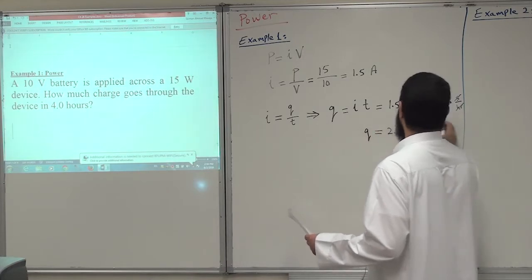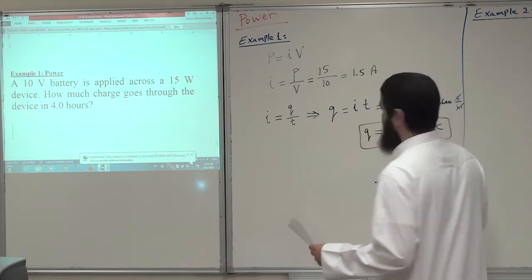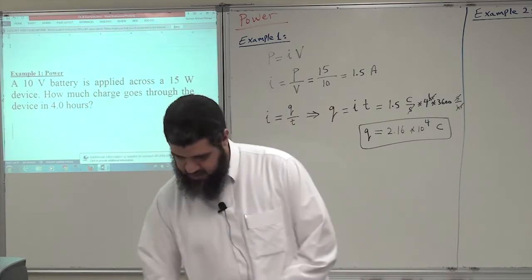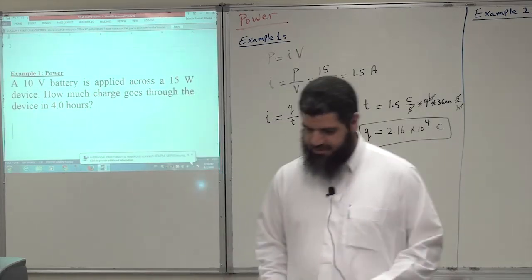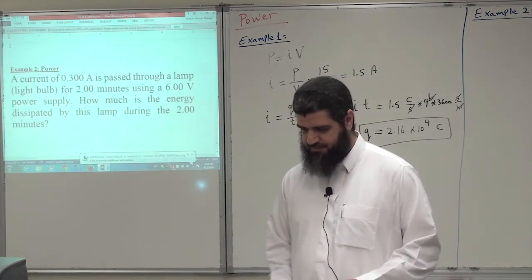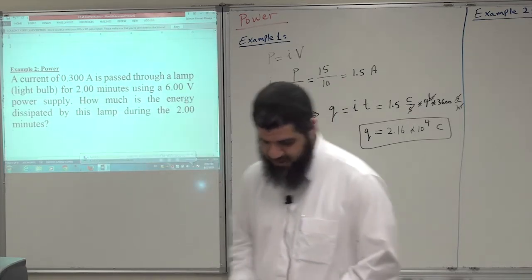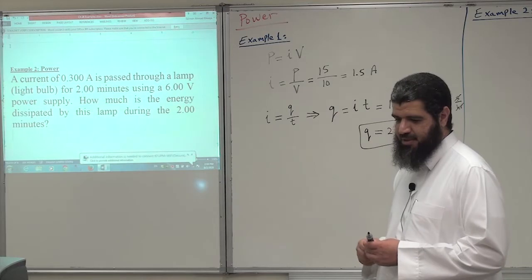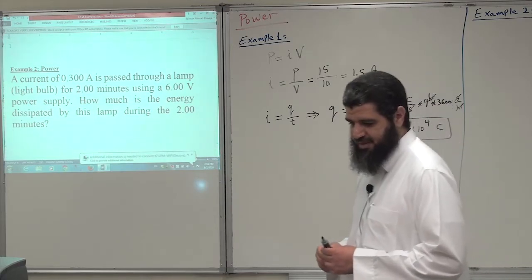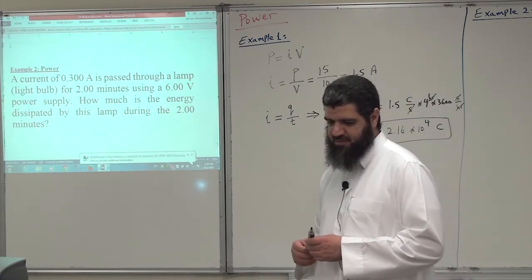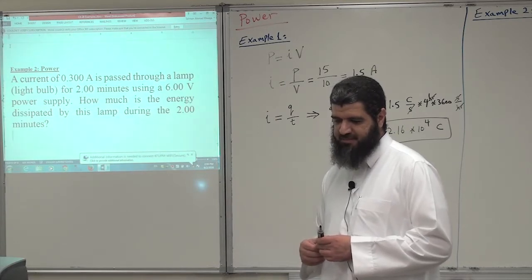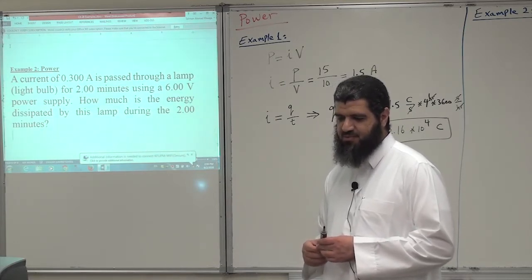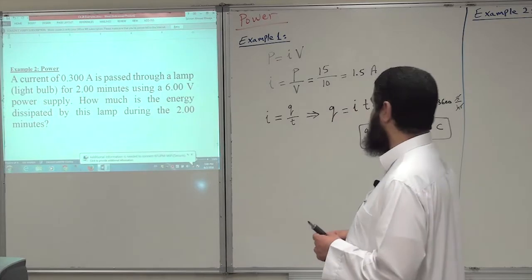This is the answer for example number one. Let us proceed to example number two. We have a current of 0.3 amperes passed through a lamp for two minutes using a 6 volt power supply. How much energy is dissipated by the lamp during the two minute interval?